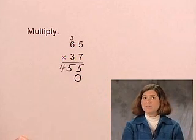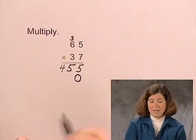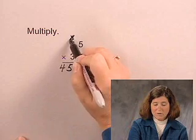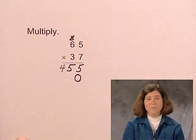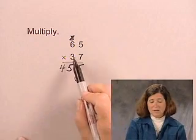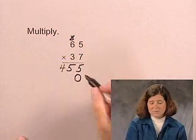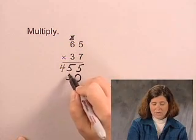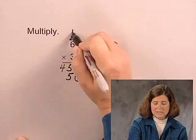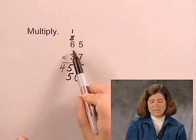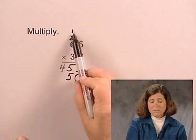And then multiply 65 times 3. In order to not get confused, I will cross off the 3 that I used above. And now multiply 65 times 3. 3 times 5 is 15. Writing a 5 below and the 1 above the 6. 3 times 6 is 18, plus the 1 is 19.